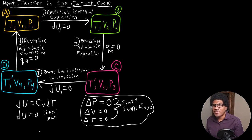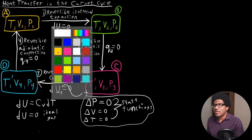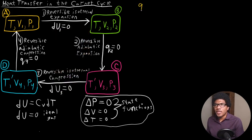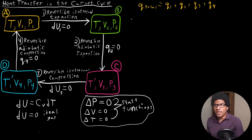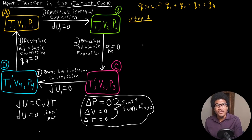So let's try this exact same thing with heat as well. If we want to get the total heat, we're going to take the exact same approach of adding up the contributions at each step. So we'll have Q1, Q2, Q3, and Q4. If we're trying to calculate Q1, so let's do this for step one. We know that step one is a reversible isothermal expansion, and we know that that means that du for an ideal gas is going to be zero.